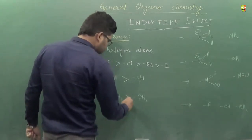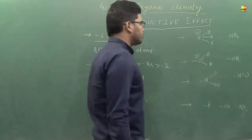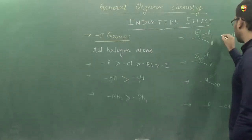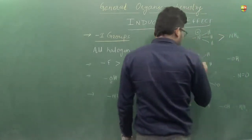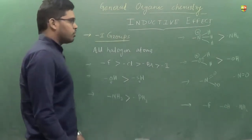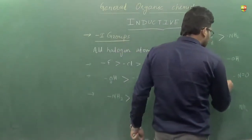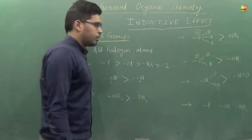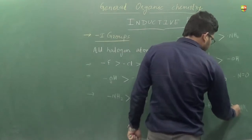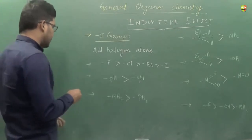For NH2 and PH2, nitrogen has more electronegativity, so the order is NH2 > PH2. Nitrogen having a positive charge has more tendency to withdraw electrons, and oxygen having a positive charge also has more tendency to withdraw electrons. When nitrogen is attached to two electronegative oxygen atoms, it has more electron-withdrawing tendency. If you compare fluorine, oxygen, and nitrogen, fluorine is more electronegative, so the order is F > O > N.